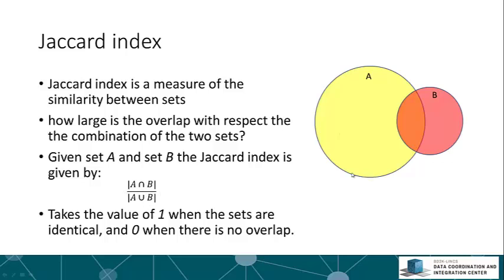The Jaccard index is given by the intersection — the number of genes present in both sets — divided by the union, which is the total number of unique genes across the two sets. The Jaccard index is a number that varies between 0 and 1. The value is 1 when the sets are identical, and 0 when there is no overlap between the two sets.